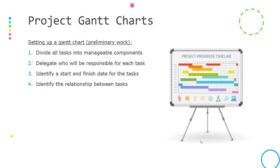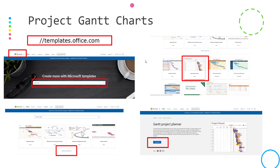Let's get into Gantt Charts. To simply set up a Gantt Chart, we need to do four things: divide all the tasks into components, delegate people responsible to these tasks, assign a start and finish date, and finally determine the relationship between these tasks. There is a set of simple Gantt Chart templates freely available from Microsoft Office. The website is templates.office.com, and in the search box we type Gantt Charts to find the template style that suits you and simply click and download.